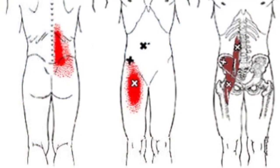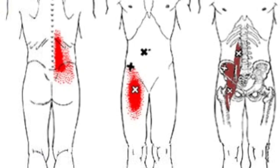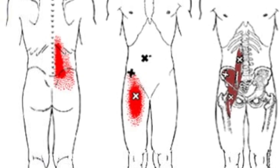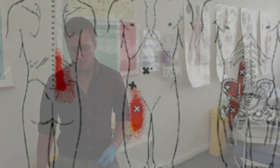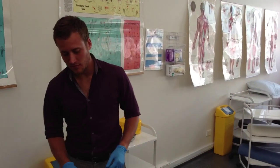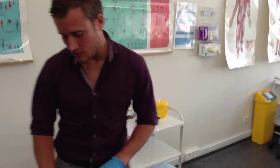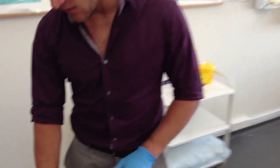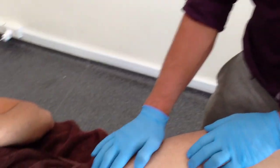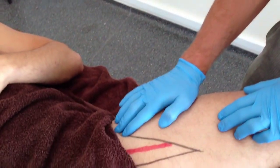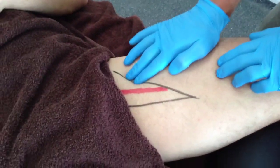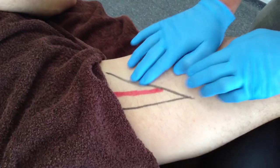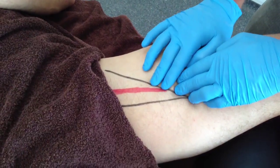The lower trigger points for the iliopsoas will be needled with the patient in supine with the leg in an externally rotated and supported position. To needle this trigger point, the practitioner must have a good understanding of the anatomy around the femoral triangle.